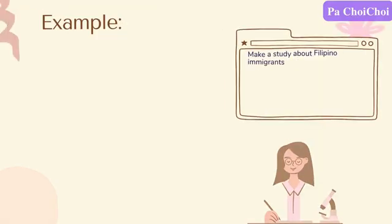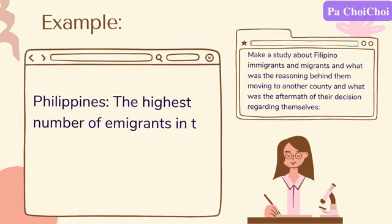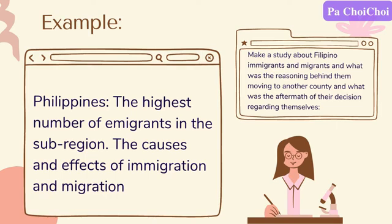For example, if I want to make a study about Filipino immigrants and migrants — their reasoning behind moving to another country and the aftermath of their decision — the first proposed title was 'Philippines, the Highest Number of Emigrants in the Subregion: The Causes and Effects of Immigration and Migration.' This title is way too long and broad. It indicates the researcher must find out why the Philippines has many emigrants compared to other subregions, and it does not specify whether the whole country or all regions are included in the study.